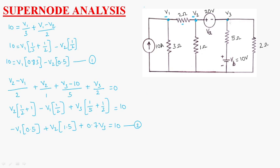Now writing the voltage equation between nodes V2 and V3: V2 minus V3 equals 20 volts. Let us call this equation 3.